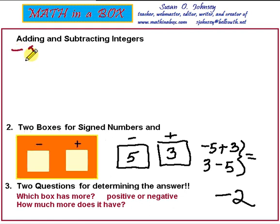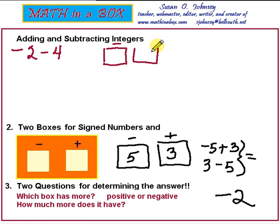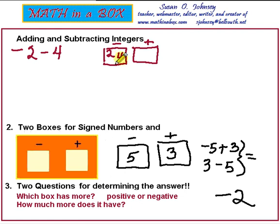Negative 2 minus 4. Draw your two boxes — be sure you put a negative above one and a positive above the other. Now look at your numbers. The 2 has a sign on the left that's a negative, so the 2 is negative — write the 2 in the negative box. But the 4 also has a negative on its left, so it too is negative and will also go in the negative box.